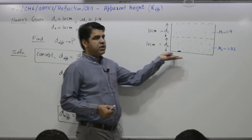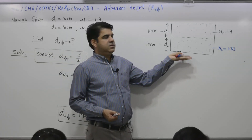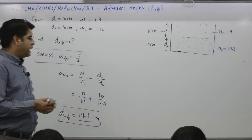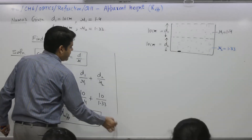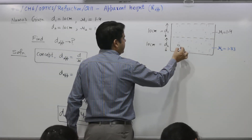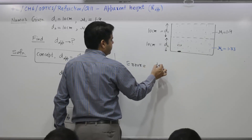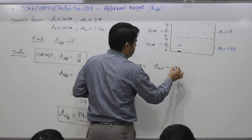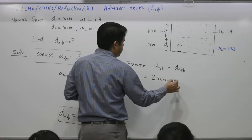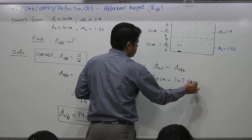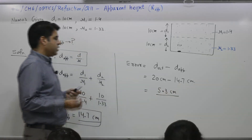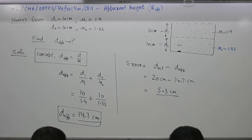The actual depth of the coin at the bottom is 20 centimeters (10 + 10), but because of the two liquids it appears to be higher up — approximately 14.7 centimeters. The error equals actual depth minus apparent depth: 20 minus 14.7, which gives 5.3 centimeters. So the error is 5.3 centimeters.